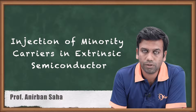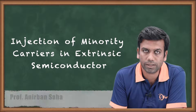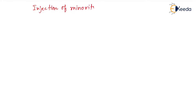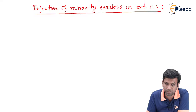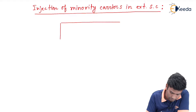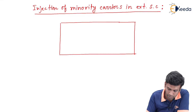Hello friends. In this video we are going to discuss about the injection of minority carriers inside the extrinsic semiconductor. For this, let us take a semiconductor bar which is an extrinsic semiconductor — specifically a n-type semiconductor.